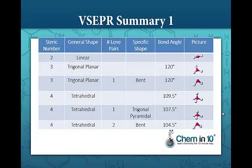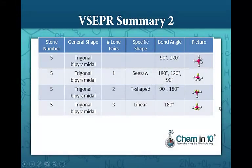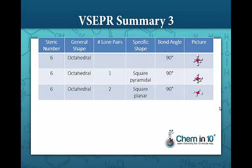Here's a summary chart. Steric numbers two through four and the number of lone pairs, the specific shape and the bond angles and pictures, and continuing with the steric number five, and finally steric number six.